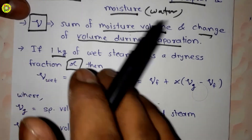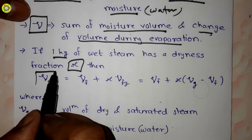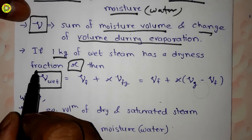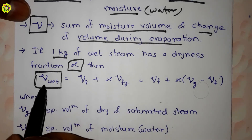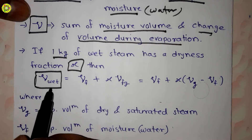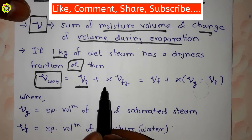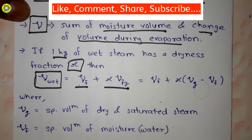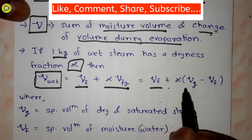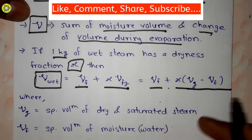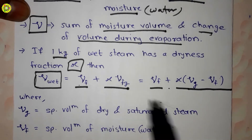The specific volume of wet steam is denoted by small letter v_wet. So v_wet is equal to vf plus x·vfg, which can also be written as vf plus x into bracket (vg minus vf).